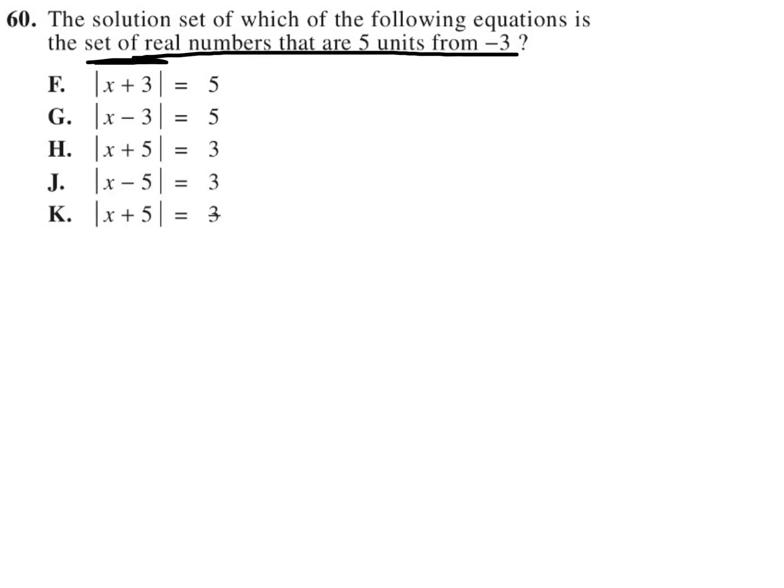So first of all, what is that? If you are at negative three and you go five units to the right, you'd be adding five and you'd find yourself at positive two.